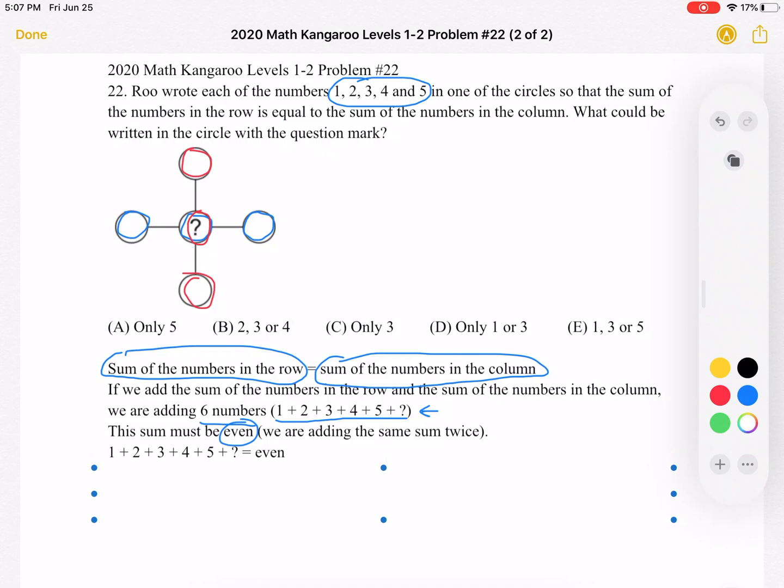So again, this is our sum: 1 plus 2 plus 3 plus 4 plus 5 plus our question mark must be an even number. So if we add together 1 plus 2 plus 3 plus 4 plus 5, we'll have 15 plus question mark is an even number.